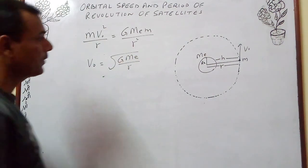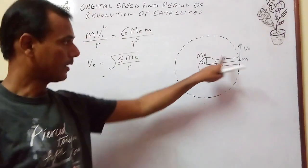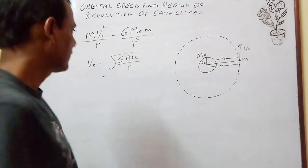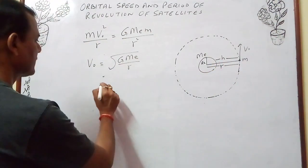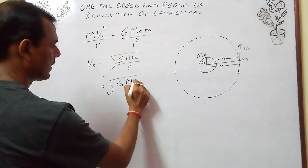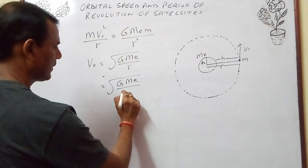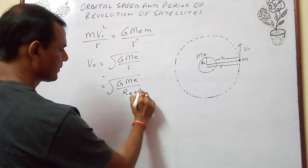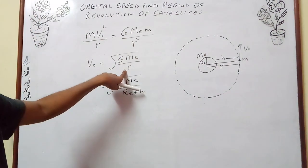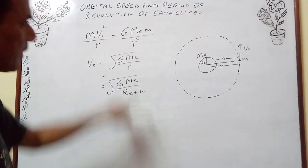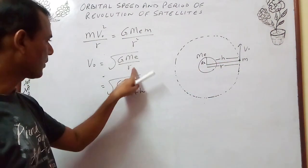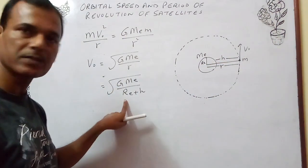Now if the height of the satellite above the surface of earth is h, then the formula becomes V0 equals the square root of G·Me divided by (Re + h). Here r is the distance from the center of earth; if height h is given, we write r as Re + h, where Re is the radius of earth.